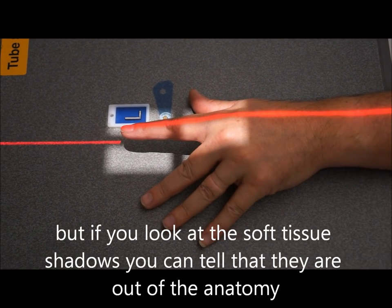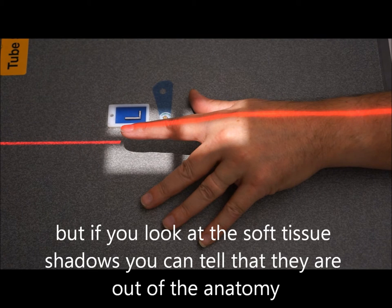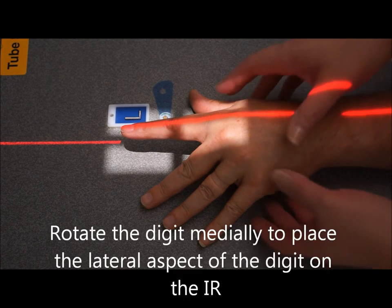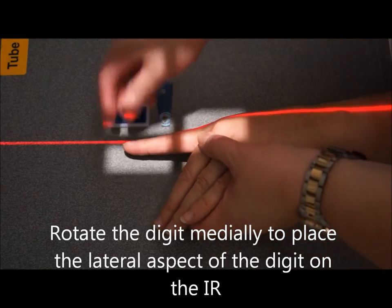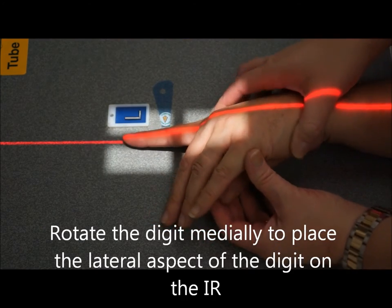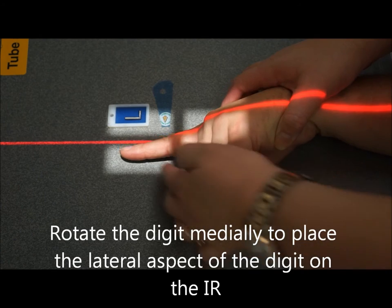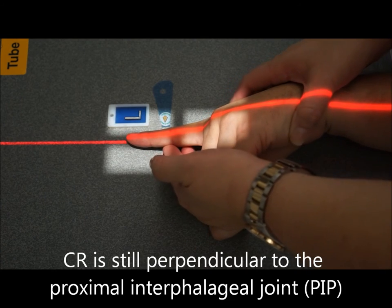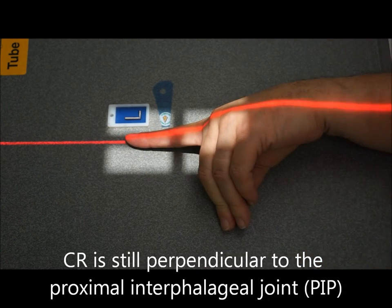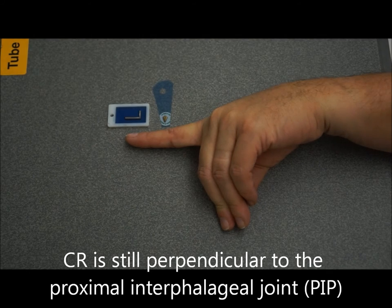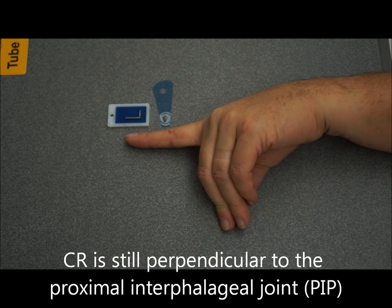And then from here we're going to go into a lateral. Now on the lateral it's a medial rotation. We want to make sure we keep the thumb out of the area of interest, other digits out of the way. Central ray still at the proximal interphalangeal joint. Nice true lateral.